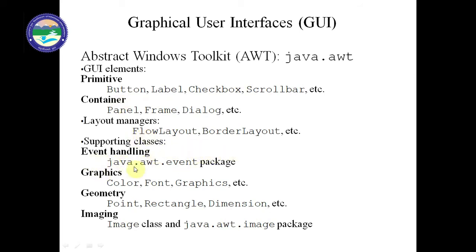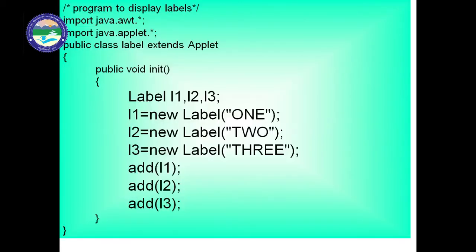Layout manager will be discussed in the next classes. We have flow layout, border layout, grid layout, and grid bag layout — different layouts for placing components. Event handling will also be performed on our AWT or Java Swing form. Graphics — color, font, and geometric shapes like point, rectangle, and dimensions — will also be used, as well as images, audio files, and video files in Java Applet and Java AWT.